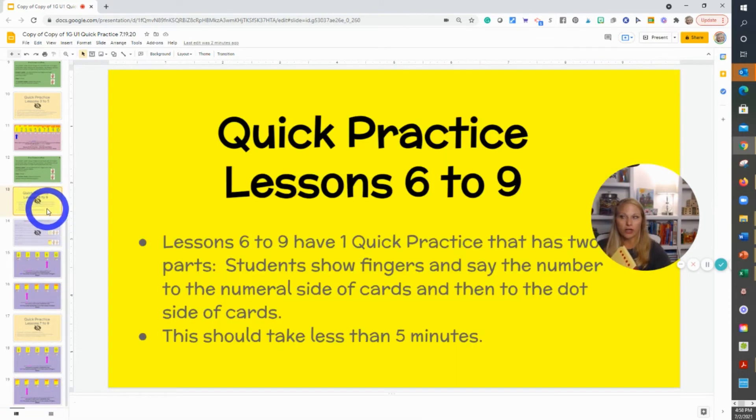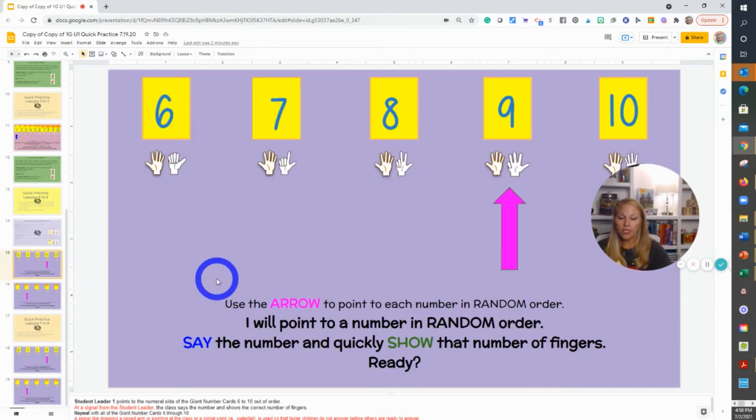When you get to lesson seven through nine, you can see it's the exact same thing. Really, once you get to lesson six, you're going to repeat this. You're going to do Five Crows in a Row and then you're going to do our giant number cards. This is something that also happens in kindergarten, so hopefully we're reviewing this. It's not brand new learning. This is going to tell us even more who remembers and recognizes their numbers and build automaticity with that.